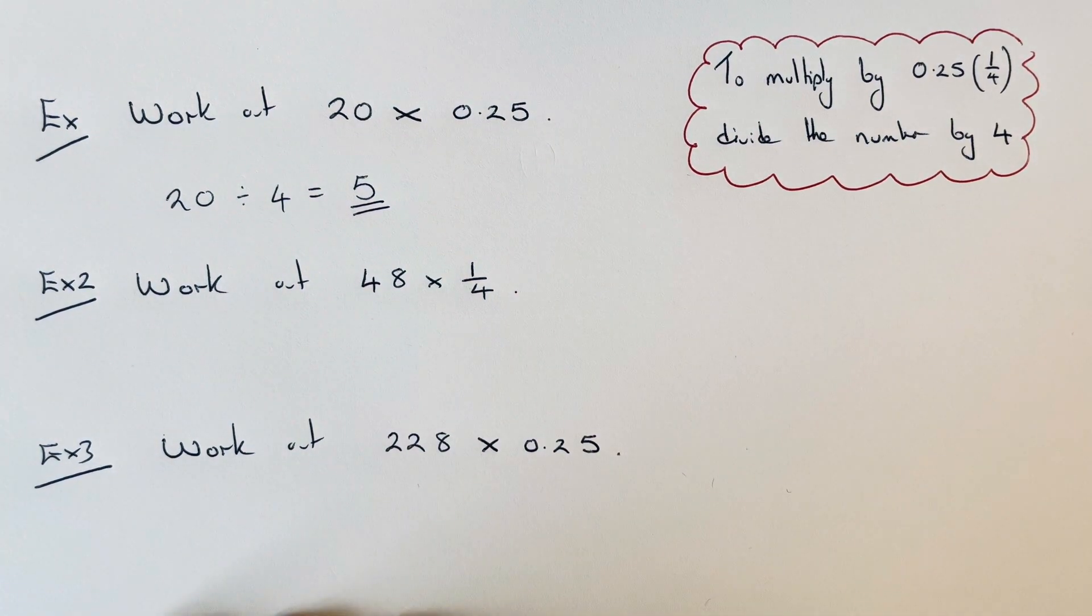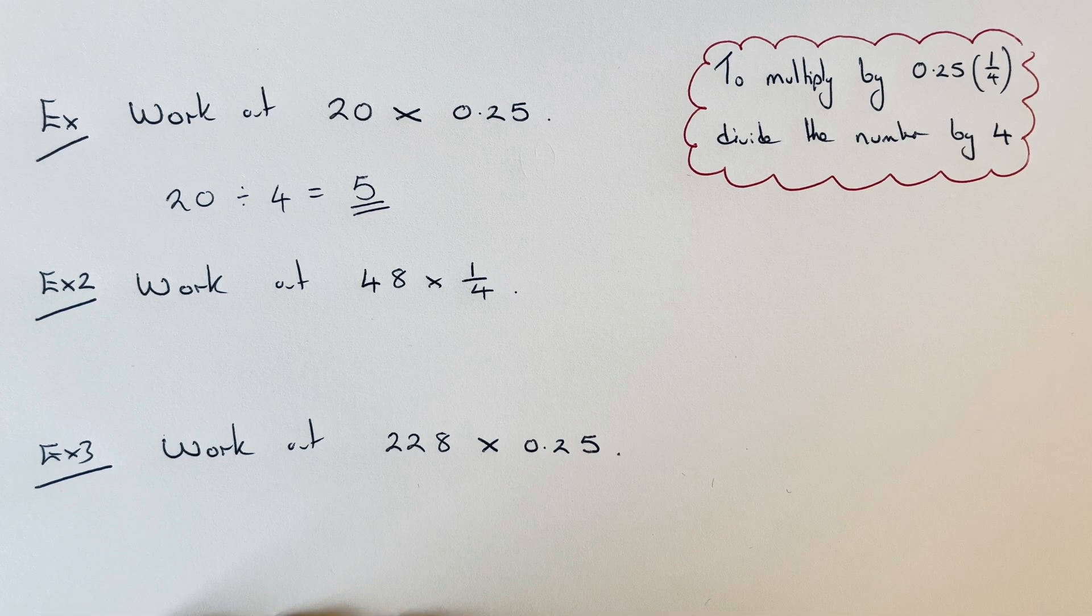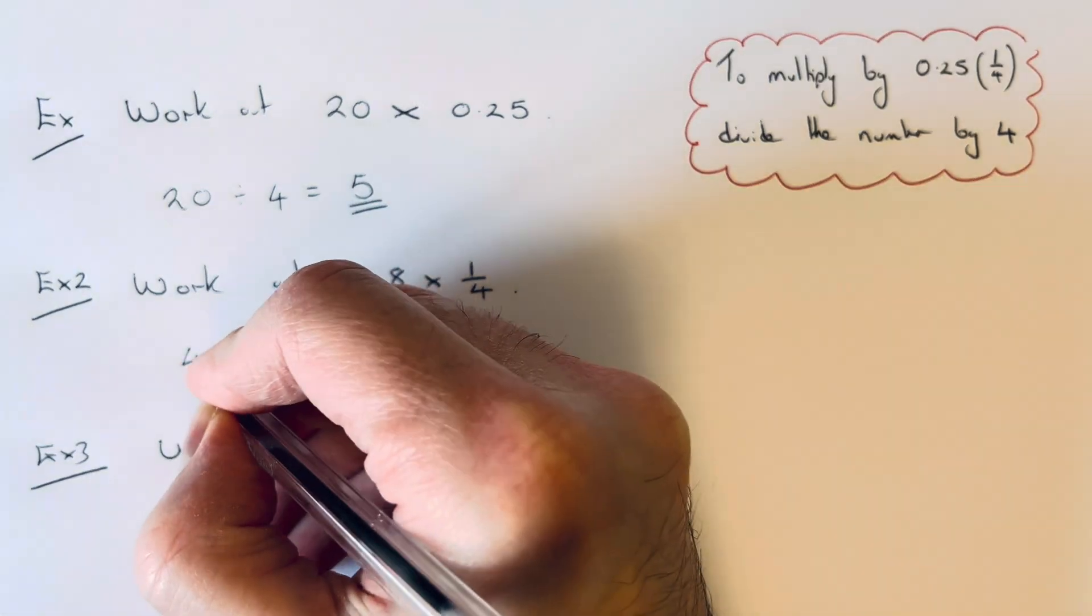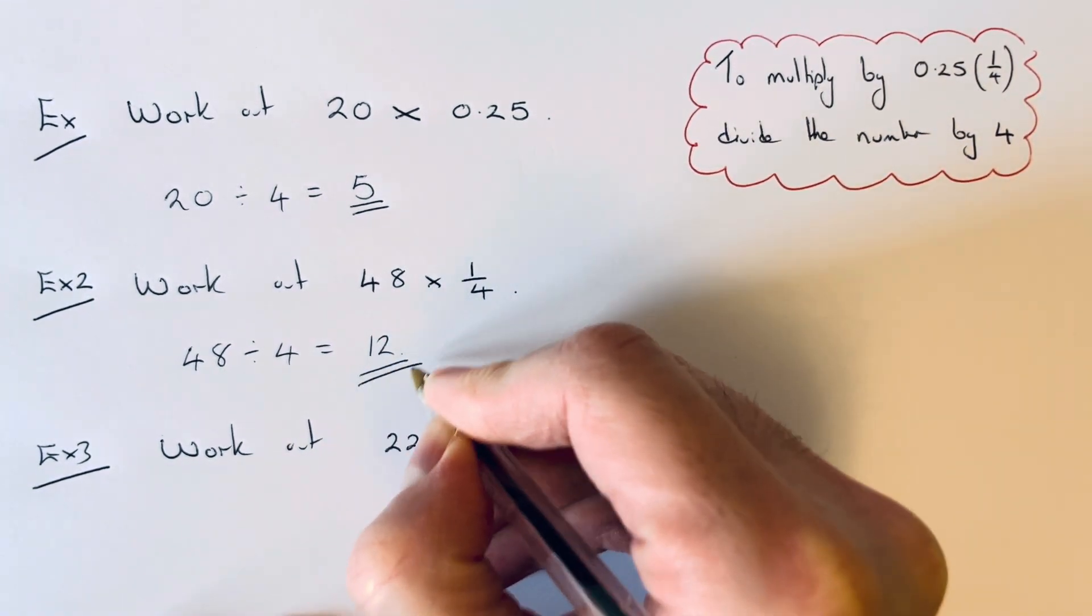So let's have a look at the second example. Work out 48 times 1 quarter. So again, we just need to divide the number by 4. So 48 divided by 4 gives an answer of 12.